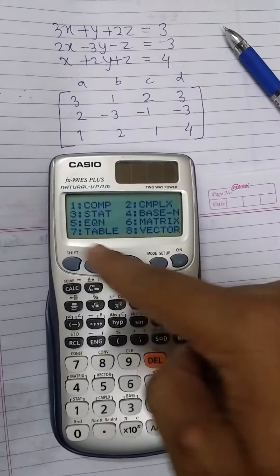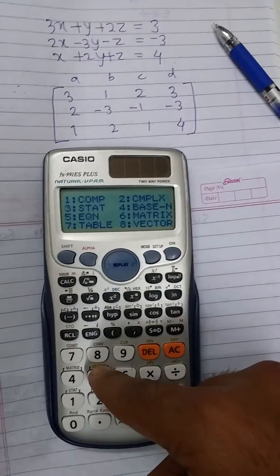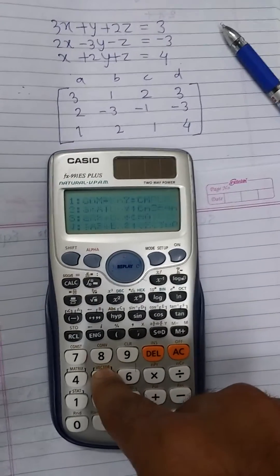Then we will see 8 options. Out of 8, see the 5th option, that is equation mode. To select equation mode, press the 5 button.